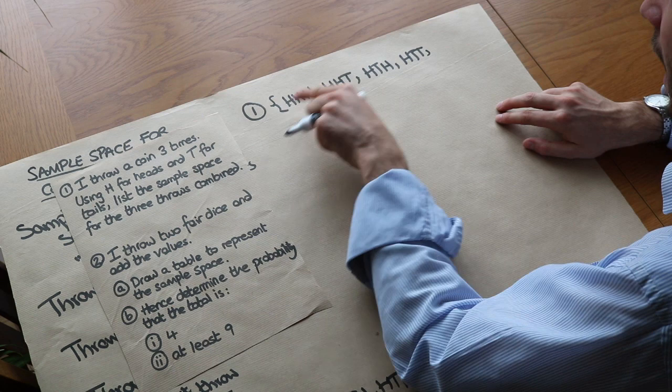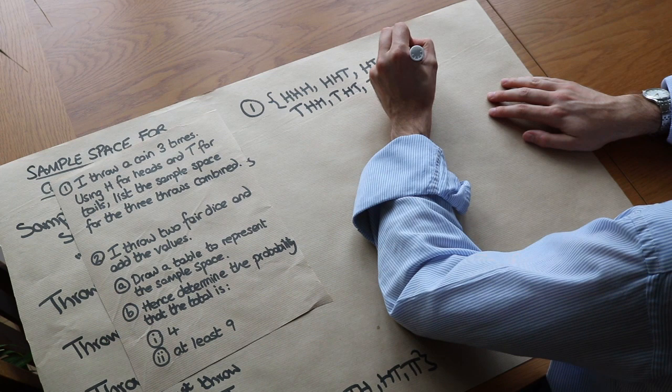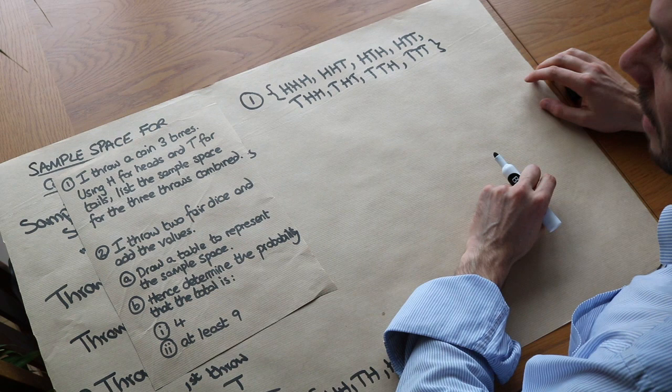So we could have tails, heads, heads. Tails, heads, tails. Tails, tails, heads. And tails, tails, tails. So there we go. We can see that we have eight different possible outcomes in our combined sample space from the three throws.